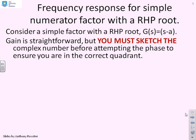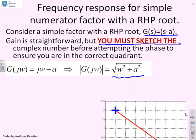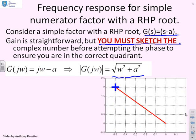Separate example: what happens if we have G(s) = s - a? This is slightly different, as you'll see. Again, we recommend you sketch first so you don't make a silly mistake. For completeness, the modulus is the same formula as with left half plane factors, so nothing different there.